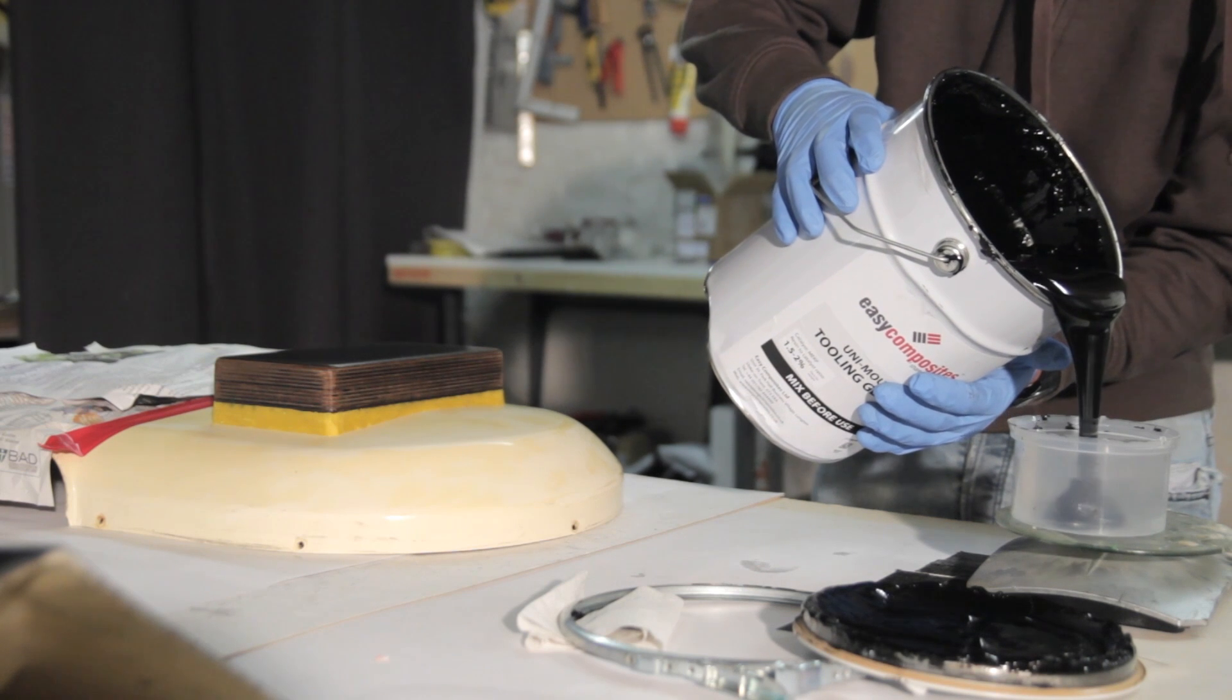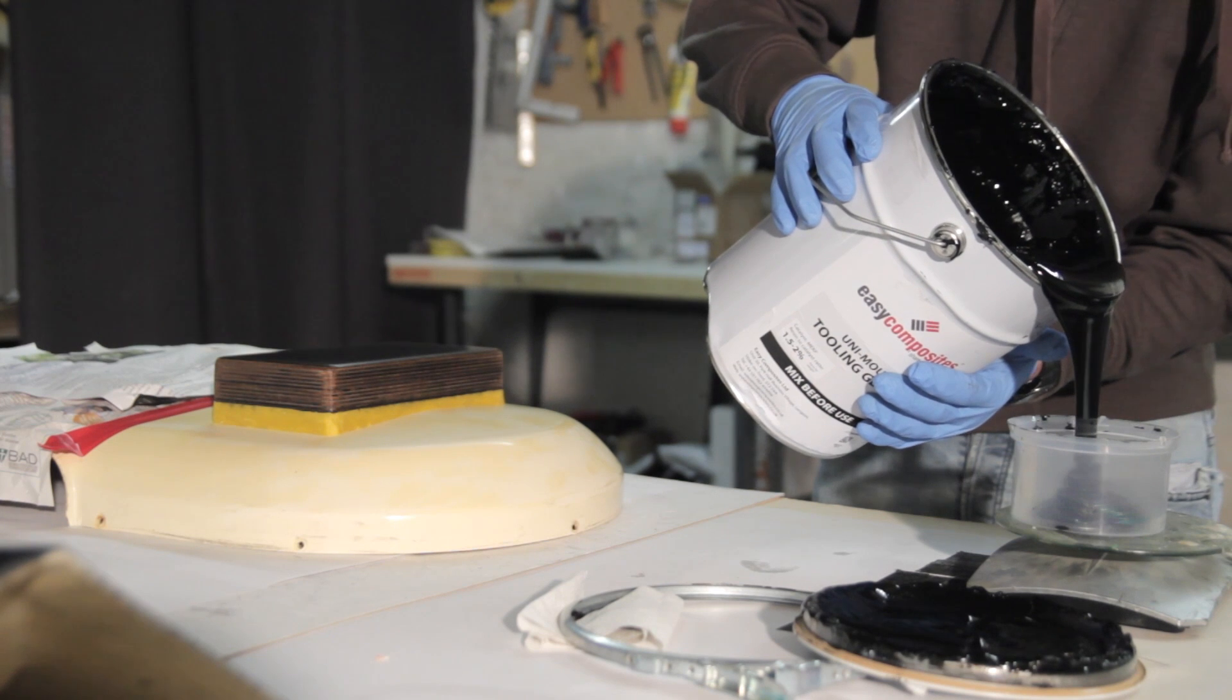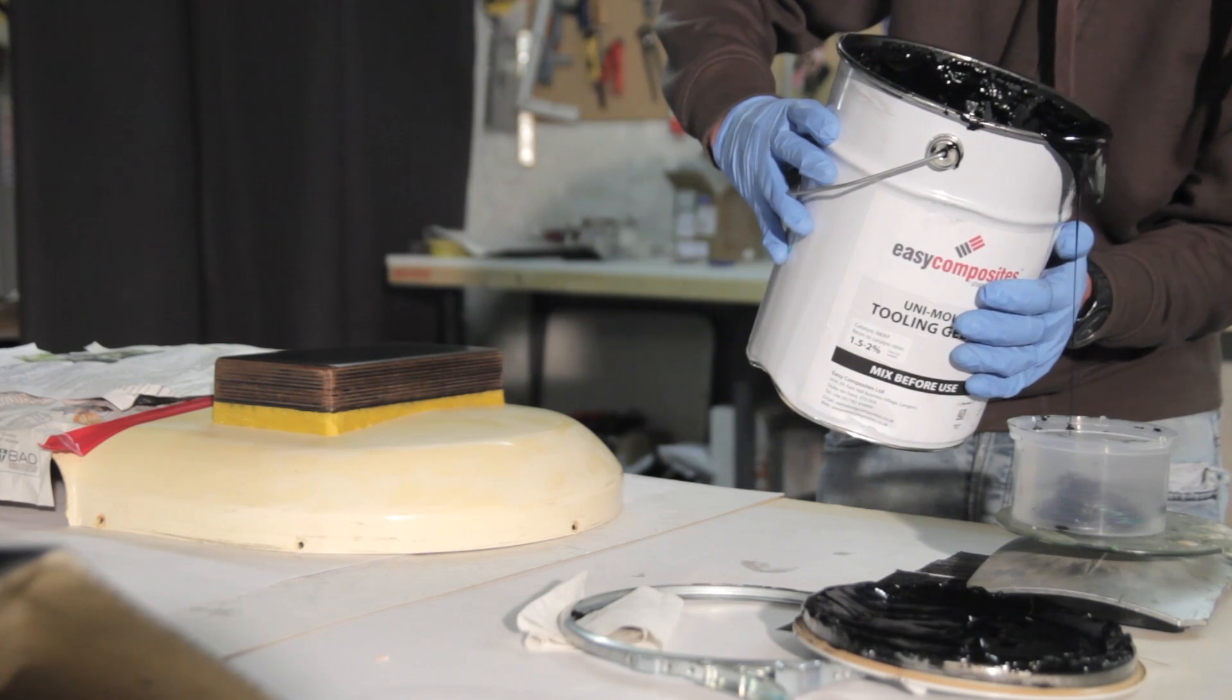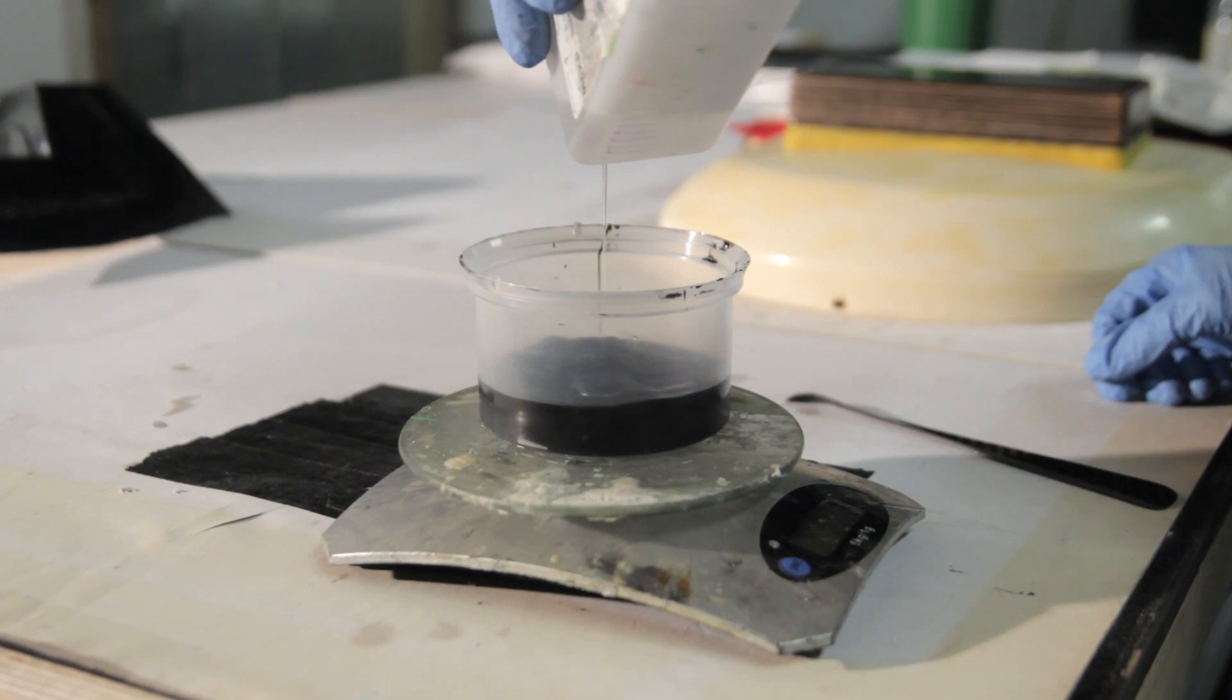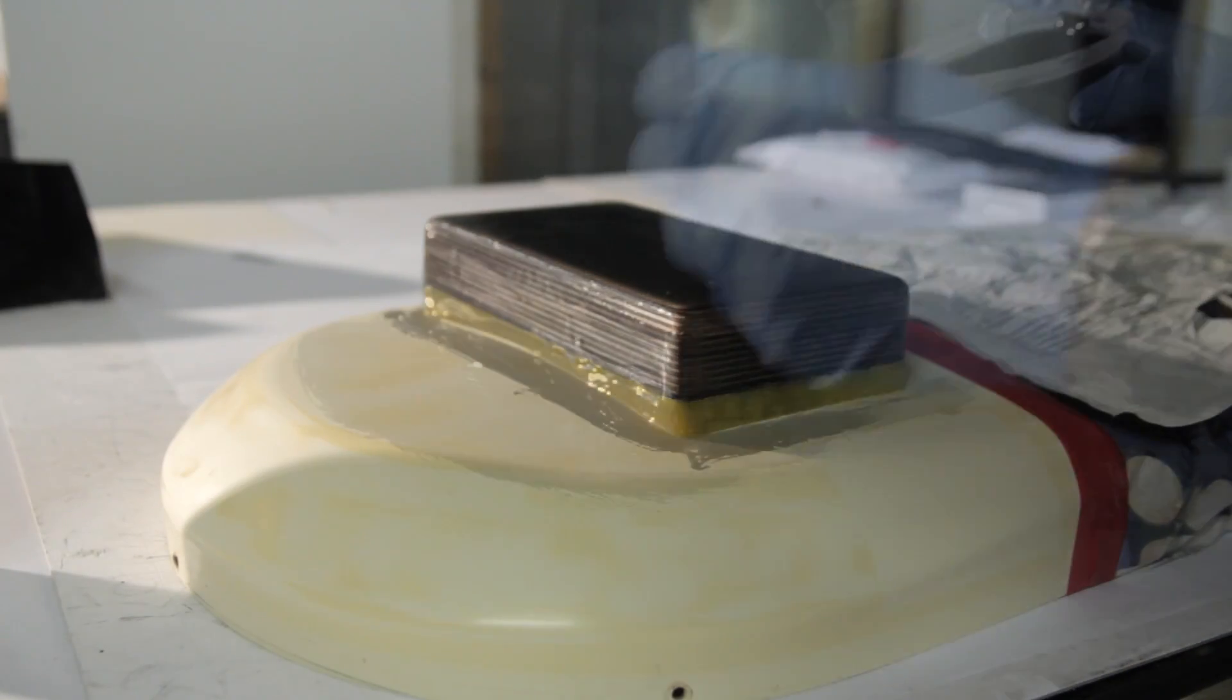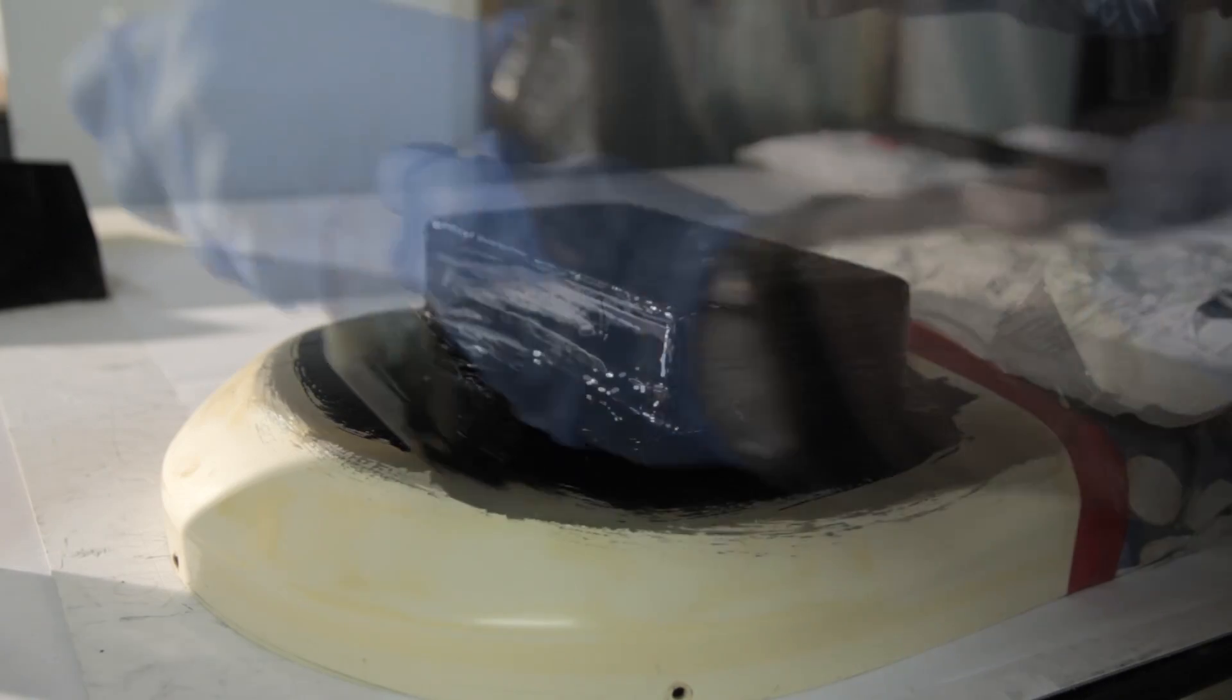Here I'm using the tooling gel coat, so I'll be using the Uni Mold system to make the mold. The first part is using a gel coat, then a coupling coat, and then the tooling polyester resin on top. It's all mixed with a catalyst which will make it harder. You can find it easily in car shops.